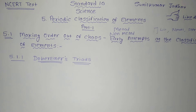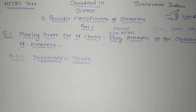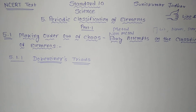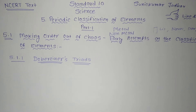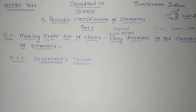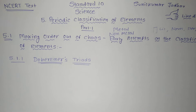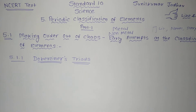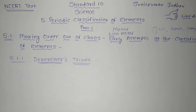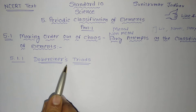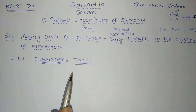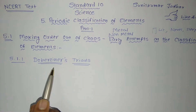Johan Wolfgang Dobereiner studied as a pharmacist at Munchberg in Germany and then studied chemistry at Strasbourg. Eventually he became a professor of chemistry and pharmacy at the University of Vienna. Dobereiner made the first observation on platinum as a catalyst and discovered similar triads of elements, which led to the development of the periodic table of elements. Now we will see Dobereiner's Triads — the classification of elements as per Dobereiner.